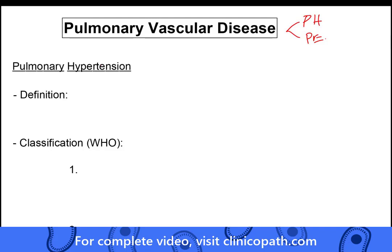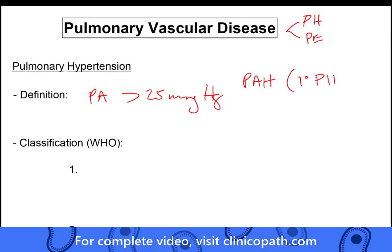Let's get the terms right. There's a wrinkle in the term pulmonary hypertension because the strict definition is basically any disease in which pulmonary artery pressure is greater than 25 millimeters of mercury. But you have to distinguish that from the term pulmonary artery hypertension, which is the new term for what we used to call primary pulmonary hypertension. So pulmonary artery hypertension is a subset of pulmonary hypertension.